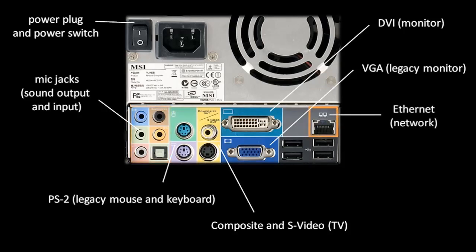This connector on the right, which looks like an oversized phone jack, is for ethernet, which is the most common connection for wired networking. Most commonly, this is the port you use to get an internet connection.